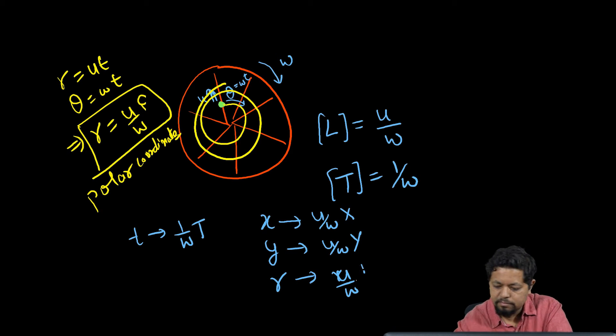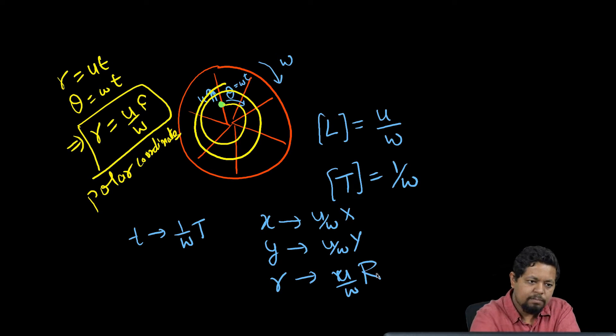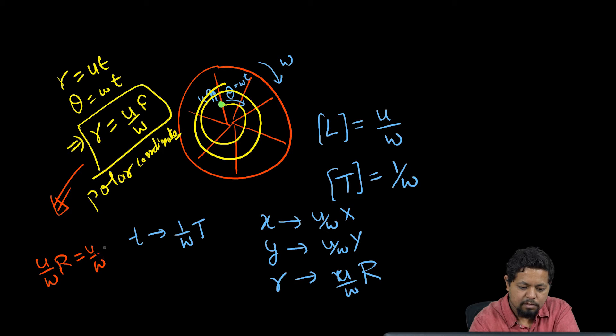I can go ahead and do a non-dimensionalization by making the translation r goes to u by omega capital R. For that particular purpose, this equation becomes u by omega capital R equals u by omega theta, which gives me r equal to theta—that is nothing but an equation of an outward spiral.